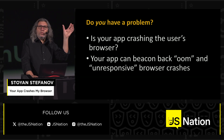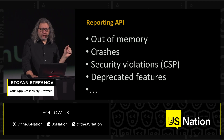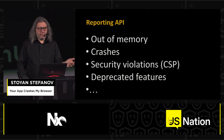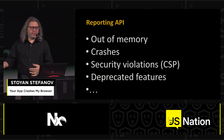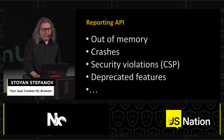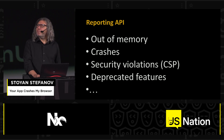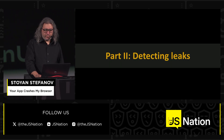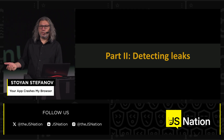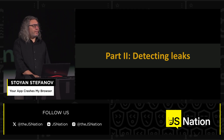You can get out-of-memory or unresponsive crashes from the Reporting API. There are actually other things you can get from it too — like if your users see a security violation (CSP), or if the browser sends notices about deprecated features. So once you discover that you do leak memory, what are you going to do about it?